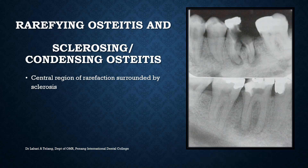This image shows both rarefying ostitis as well as sclerosing or condensing ostitis — these terms can be used interchangeably. Rarefying ostitis refers to a more radiolucent appearance, while condensing ostitis refers to a more radiopaque appearance. Bone reacts to inflammation by either bone formation or bone destruction. More bone formation results in condensing ostitis, while bone loss results in rarefying ostitis. Rarefaction means radiolucency surrounded by a periphery of radiopaque sclerosis.